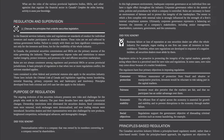Regulation and Supervision. In the financial services industry, rules and regulations set standards of conduct for individual investors and market participants at securities dealers. These rules are set and enforced by various government bodies. Failure to comply with them can have significant consequences, not only for the investors and firms, but for the credibility of the whole industry. In Canada, the Provincial Securities Commissions and SROs are the primary sources of the rules governing the industry. These organizations impose rules and restrictions to ensure market integrity, protect investors, and promote a fair and efficient securities marketplace. A basic principle of regulation is that when two or more regulations conflict, the strictest standard applies.